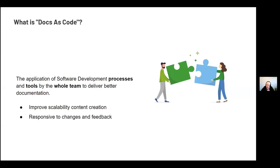Hopefully most people here are familiar with docs-as-code. The general idea is that you take the pro tools and processes that your development team are using — specifically in a software development context — and you involve the whole development team in actually helping you create content. The reason we do that is that if you start using agile tools and agile processes, you can respond to change faster and hopefully scale up and do more with less.